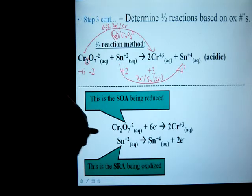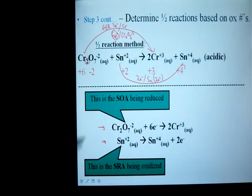So now we have our half reactions. I broke them out separately here and without dealing with the oxygen yet. So we have a six electron gain and a two electron loss.